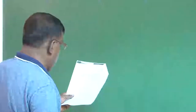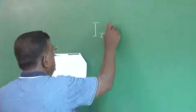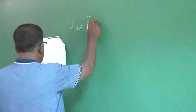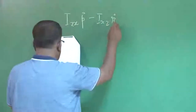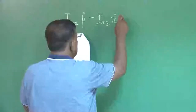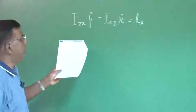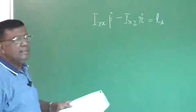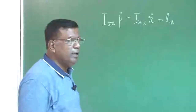If I try to derive the second equation, we start with the equation i_xx p_dot. This is the perturbed equation: i_xx p_dot minus i_xz r_dot equals L_a. What are p and r? They are the perturbed rates. L_a is the rolling moment — the moment about the body x-axis.